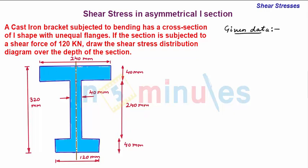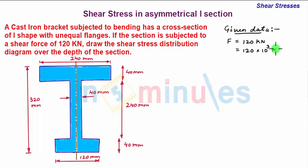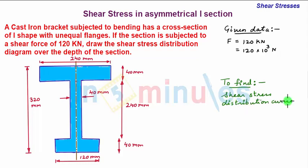We first note down the given data. The shear force F is 120 kilo Newton, which is equal to 120 × 10³ Newton. We have been asked to find the shear stress distribution curve across the depth of this eye section.